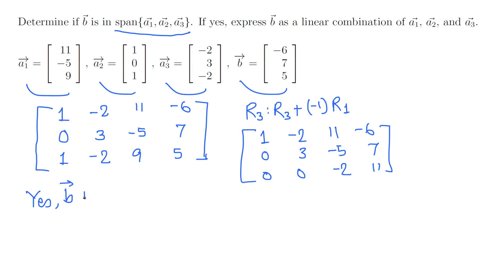B is in span{a2, a3, a1}, but doesn't matter though because this is just a set collection. Now we need to answer the second part: express B as a linear combination of these three.